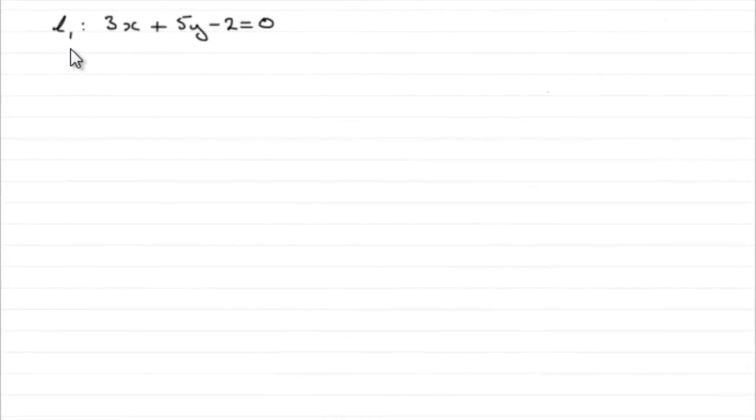Okay then, we've got the line L1, such that its equation is 3x plus 5y minus 2 equals 0, and for the first part, part A, we've got to find the gradient.